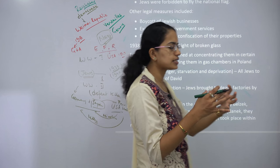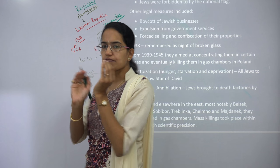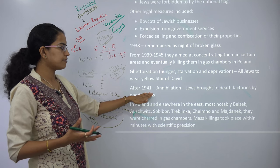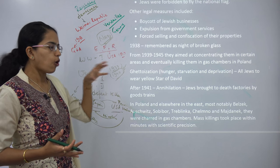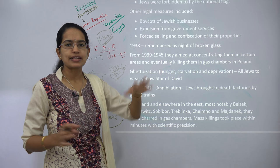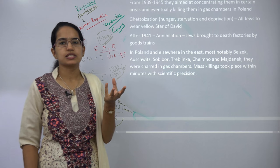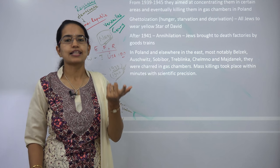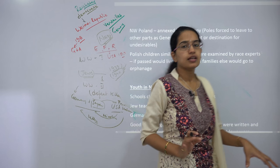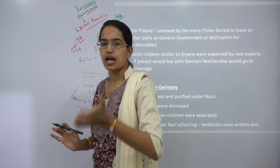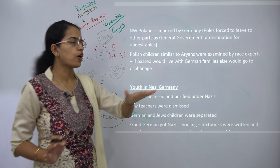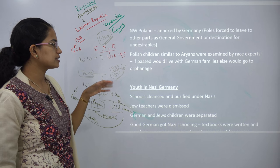Ghettoization took place, meaning Jews were concentrated into smaller specific pockets, resulting in hunger, deprivation and starvation in those areas. After 1941, annihilation took place — all Jews were brought in large numbers to places known as death factories, located in Poland and other places. With scientific precision, these Jews could be killed within minutes in mass killings. Polish children were asked to take racial tests; if they passed, German or Aryan families would adopt them. If not, they were sent to orphanages.